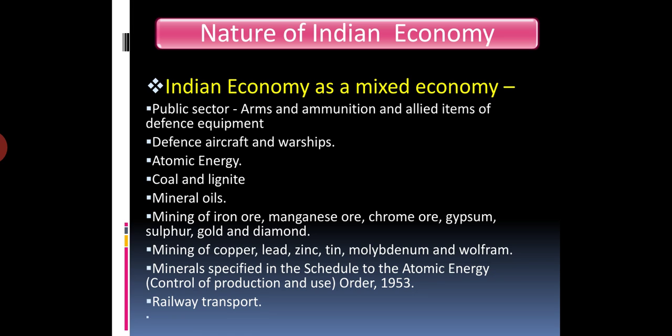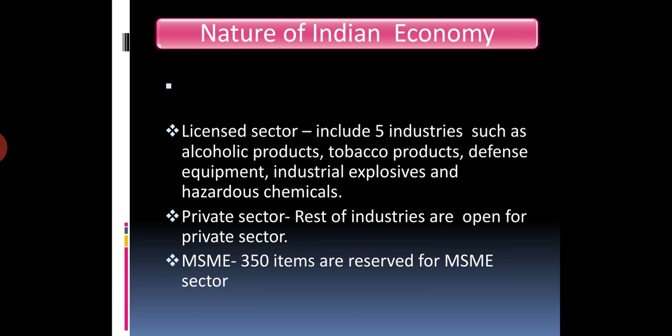The next characteristic is Indian economy as a mixed economy. The Indian economy is a mixed economy — it has a public sector, private sector, licensed sector, and MSME sector. Each sector has its own reserved items. For example, items reserved for the public sector include arms and ammunition, defense aircraft and warships, atomic energy, coal and lignite, mineral oils, mining of iron, manganese, chrome, gypsum, sulfur, gold, diamond, copper, lead, zinc, tin, atomic energy minerals, and railway transport.